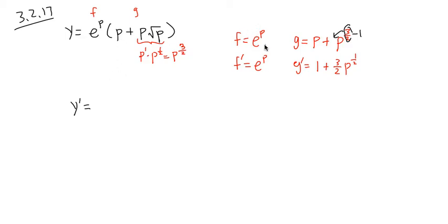So product rule now. Take e to the p times that, and I'll put this in the parentheses. So I will have e to the p times one plus three-half p to the one-half power. And for product rule, you add when you pair this one and that together.